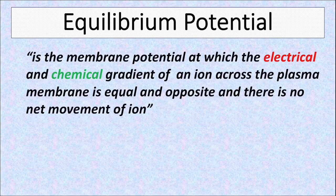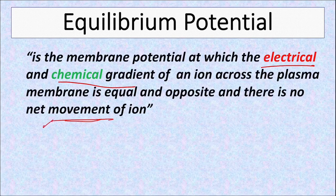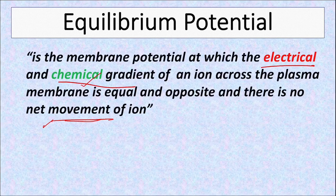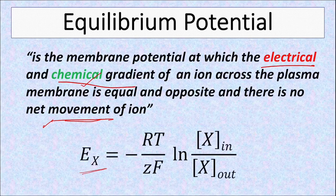Equilibrium potential is the membrane potential at which the electrical and the chemical gradient of the ion are equal and opposite and there is no net movement of an ion. If we know the concentration gradient, that is the concentration on both sides of the membrane, we can calculate the electrical gradient using an equation called the Nernst equation.